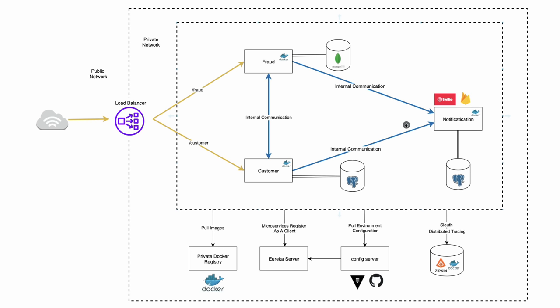Maybe Twilio or Firebase are having an incident and taking 10 seconds. The call from customer to notification doesn't have to be immediate — it can have a delay. Whether the customer receives the notification after one second, two seconds, or one minute, it doesn't really matter. What matters is that customer talks to fraud synchronously, because we need to check whether it's a fraudster or not. If it's not, then the call to notification can indeed be asynchronous.